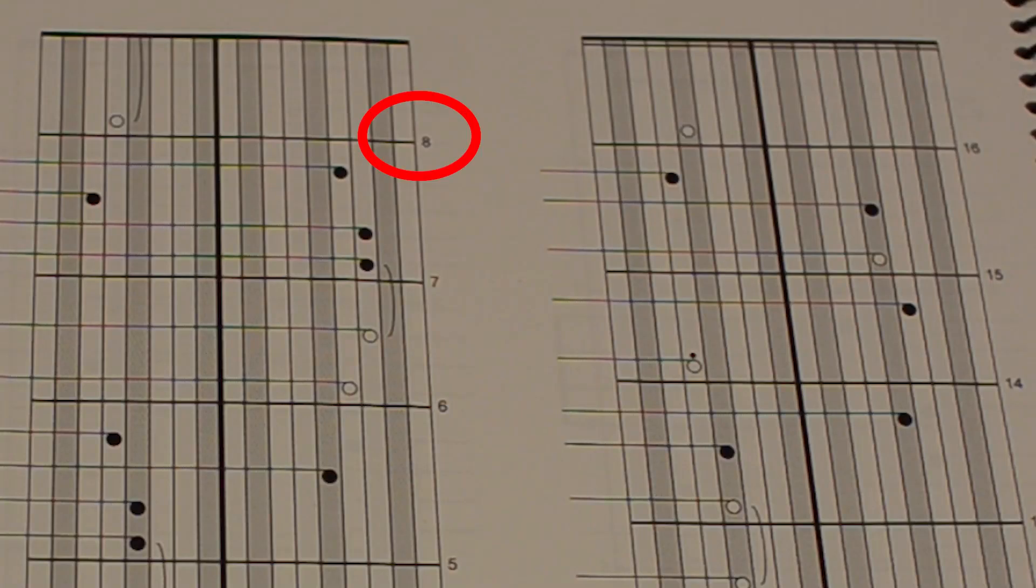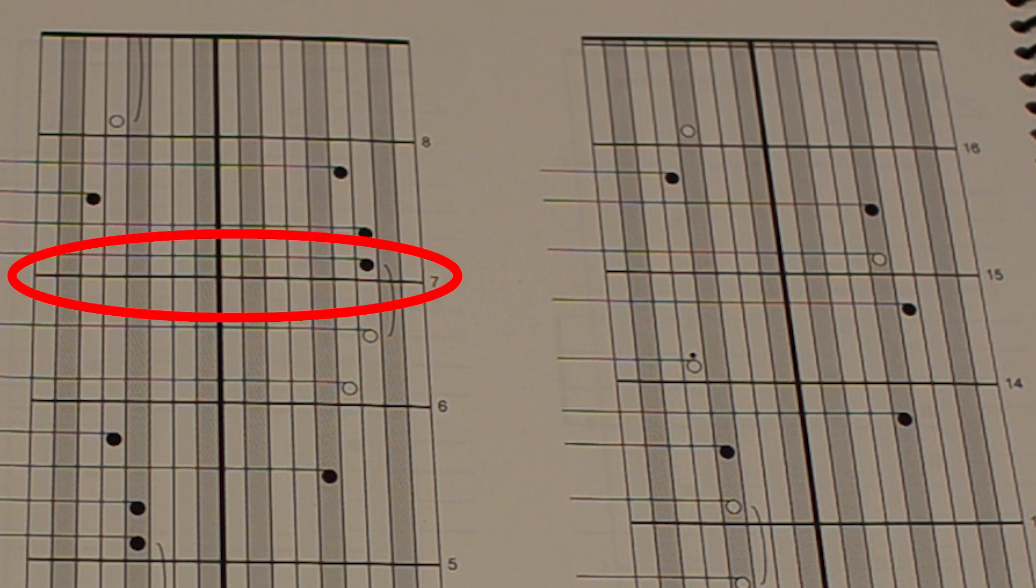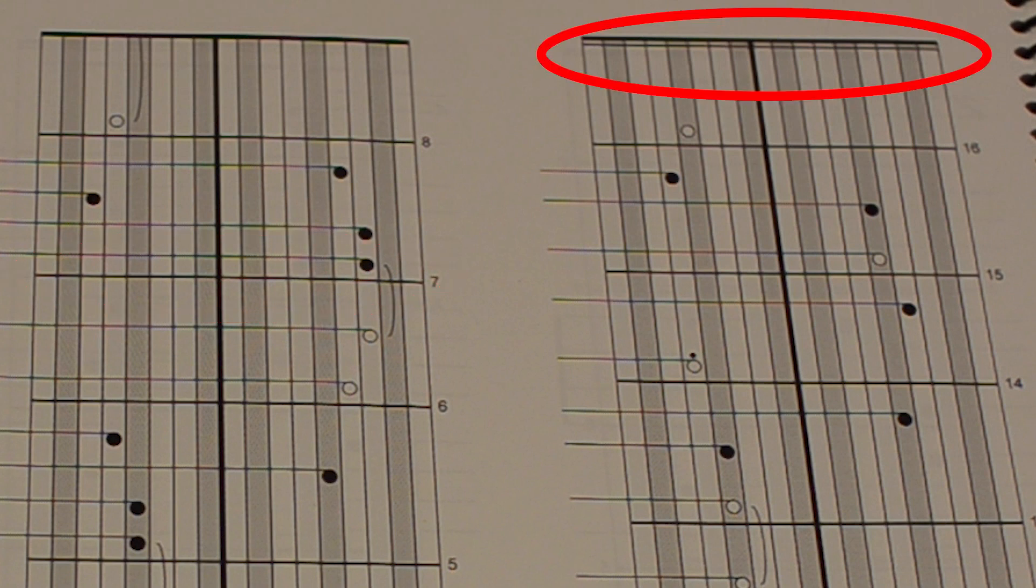The numbers on the right-hand side of the tablature signify the number of the bar, otherwise known as four notes. The horizontal black lines signify the end of the bar, and the double horizontal black lines signify the end of the song.